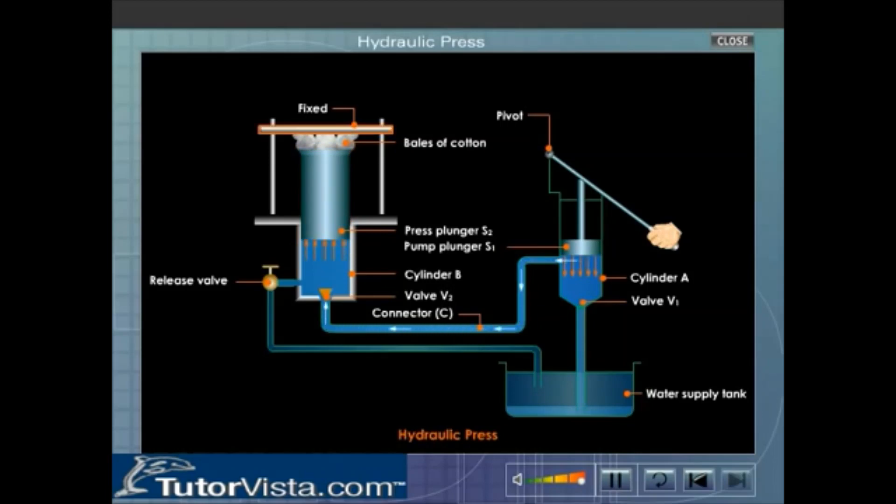The water from cylinder A is forced into cylinder B due to which the press plunger S2 is raised against the fixed roof and the bales of cotton placed on the press plunger S2 get compressed. Near the bottom of cylinder B there is a tube fitted with a release valve. After the cotton is pressed, this valve is opened so that the piston of the press plunger S2 gets lowered and the water from cylinder B is released into the tank.